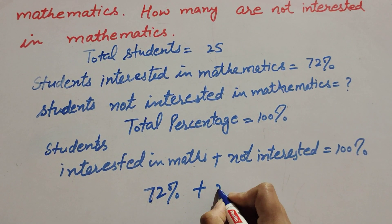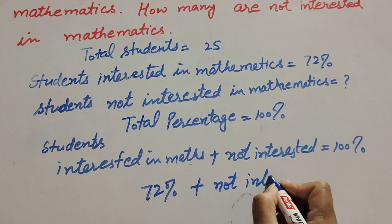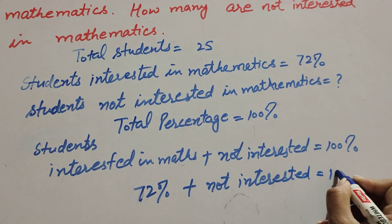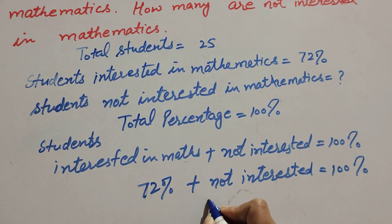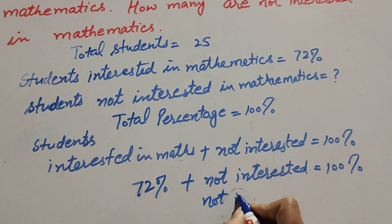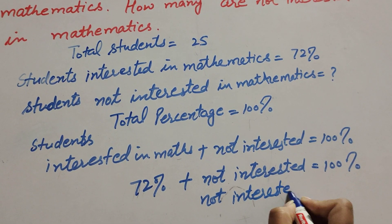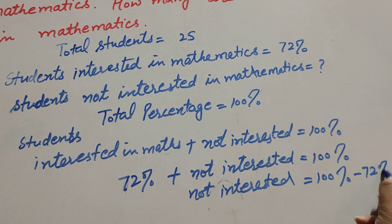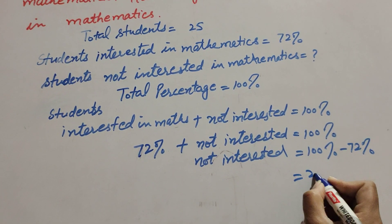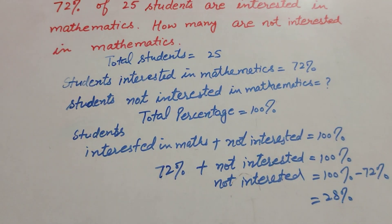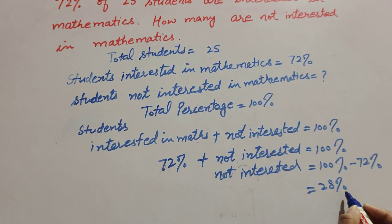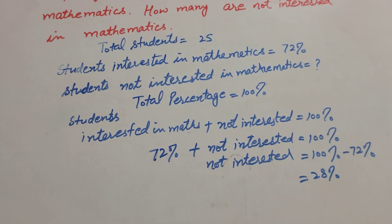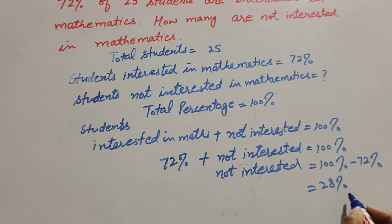Students not interested is equal to 100 percent minus 72 percent, and it is equal to 28 percent. So 28 percent of students are not interested in mathematics. Thanks for watching — like, comment, and share my video, and subscribe to my YouTube channel.